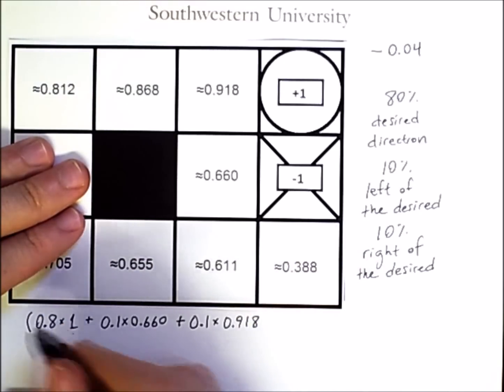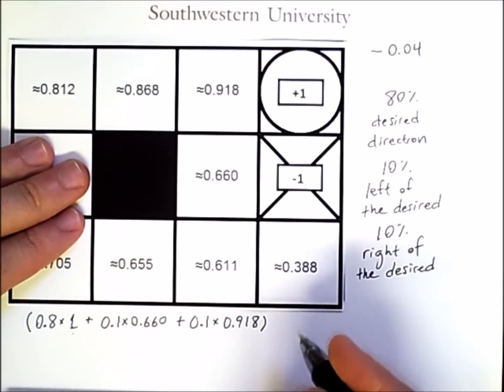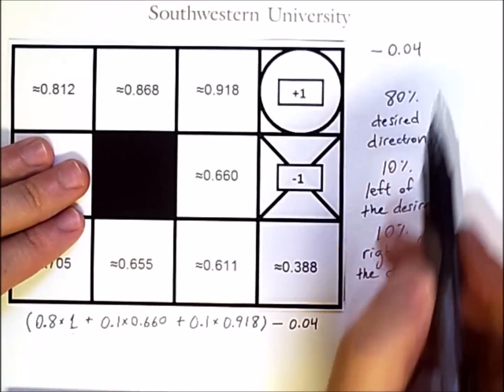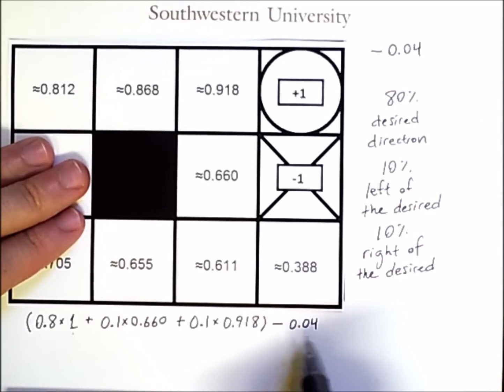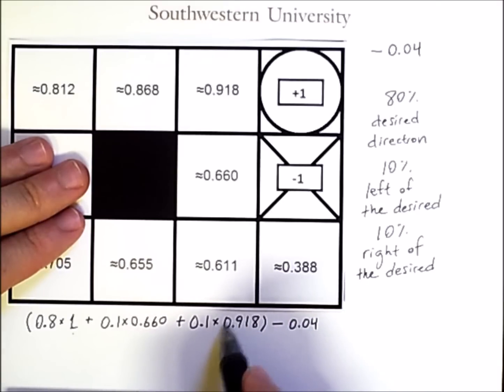And in all of these states, because we're doing a movement action, we have a movement cost of 0.04 happening there. Now, the reason this cost can be taken out is that it's the same in all directions. But if different actions had a different cost, we would include this movement cost in the individual terms along with probabilities.